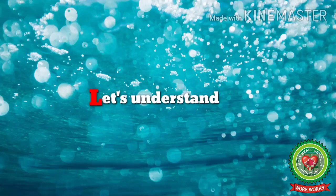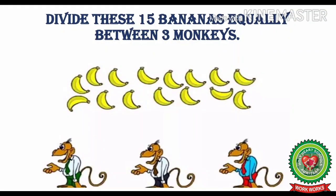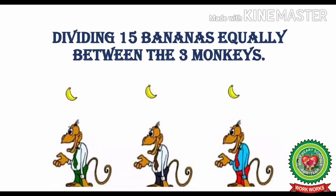Let us take one example and understand it more clearly. Divide these 15 bananas equally between 3 monkeys. The first monkey will get 1 banana, the second monkey will get 1 more banana, the third monkey will get 1 more banana. In this way, we will divide the bananas equally.